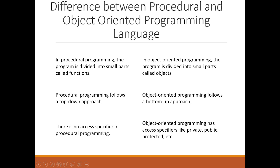Third difference: in procedural programming there are no access specifiers, whereas in object-oriented programming we have access specifiers — the three keywords: private, public, and protected. OOP features include classes, objects, inheritance, data security, and encapsulation. With access specifiers we can provide data security within a C++ program, but this feature is not available in procedural programming.